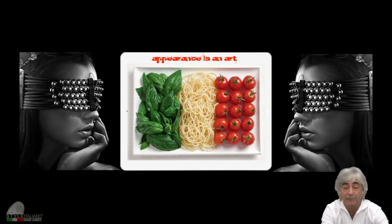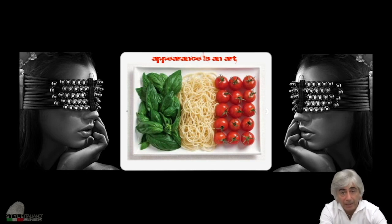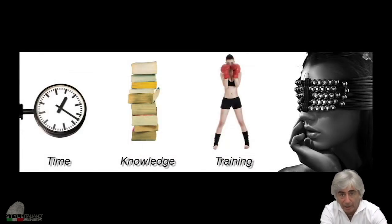You see here, you see an Italian flag, but there is basil, spaghetti and tomato. So the appearance, how spaghetti, tomato and basil could appear as a flag, that is an art. But not the color, that is green, white and red.